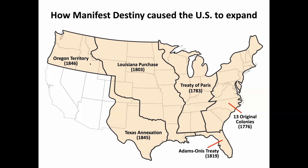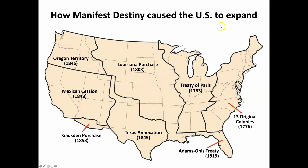The United States grew even more in 1848 by gaining what we call the Mexican Cession — land that Mexico sold to the United States after the U.S.-Mexican War. Then finally in 1853, the continental United States was complete when the U.S. purchased from Mexico what is known as the Gadsden Purchase. So as you can see, we moved from the East Coast all the way to the West Coast until we controlled all of the continental United States.